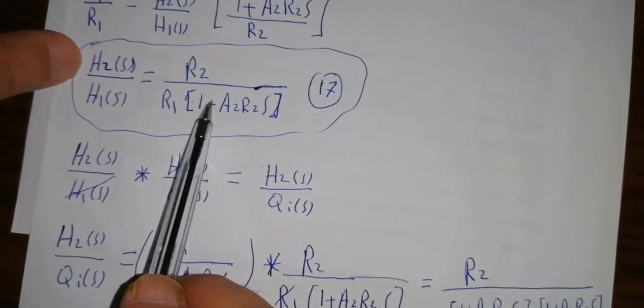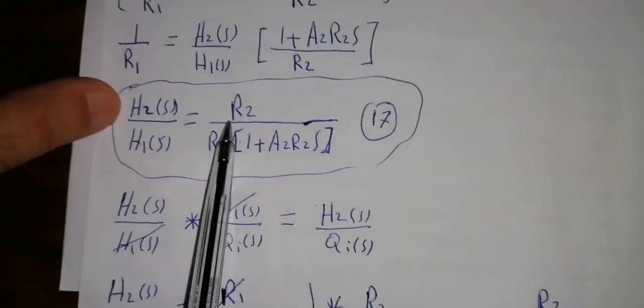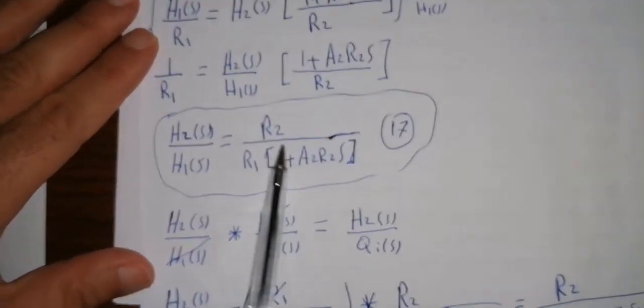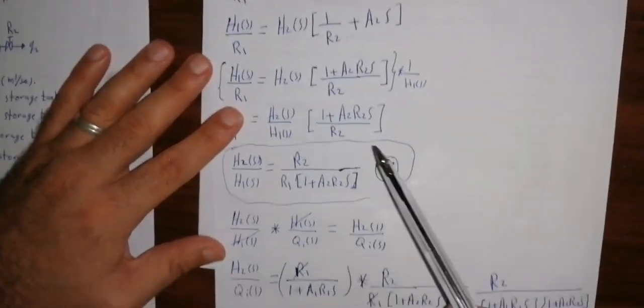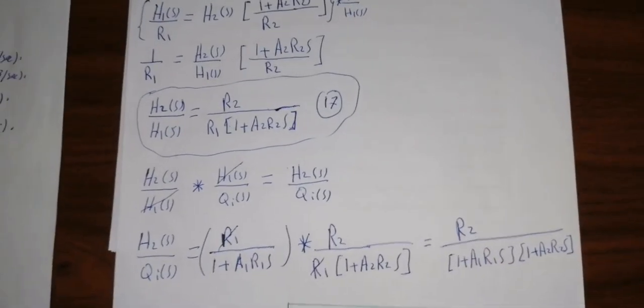Can we call H2(s)/H1(s) the overall mathematical model? No — because this is not the overall mathematical model. It does not include parameters A1 or QI. Since some important parameters do not appear in this function, it cannot represent our complete mathematical model. We need a model that includes all parameters from the first storage tank to the last.